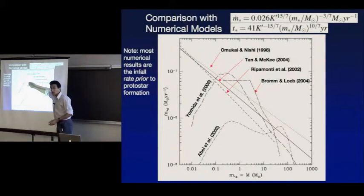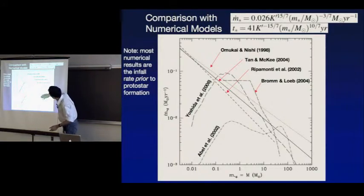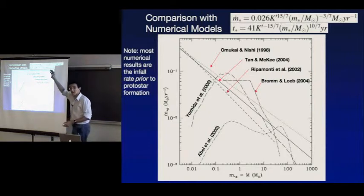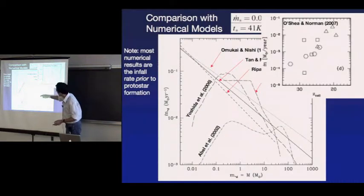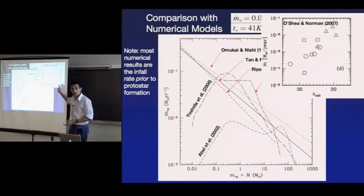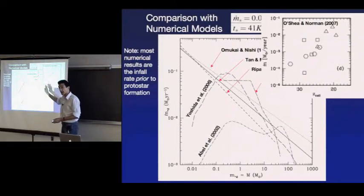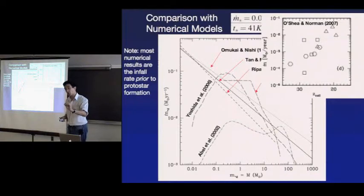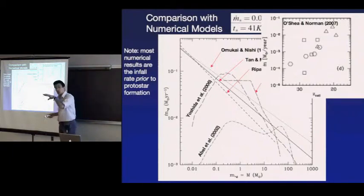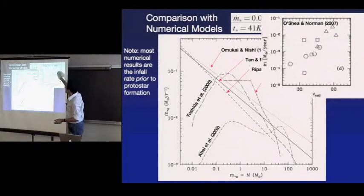Bromm put in a sink particle in one of his SPH simulations and saw this kind of behavior — somewhat elevated accretion rates early on, then declining to similar values that we estimate. K' is our parameter and we can slide that up and down. O'Shea and Norman's 12 halos show higher-redshift halos have smaller values of the accretion rate than those at lower redshift, because of higher residual electron fractions catalyzing more H2 and reducing that entropy parameter.